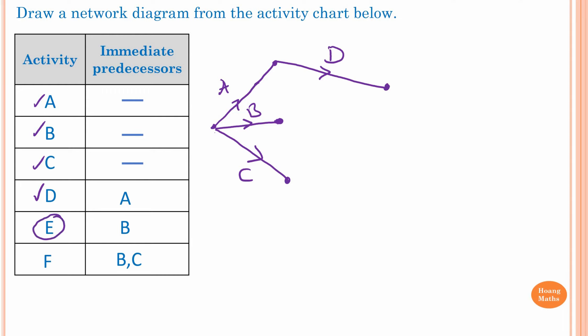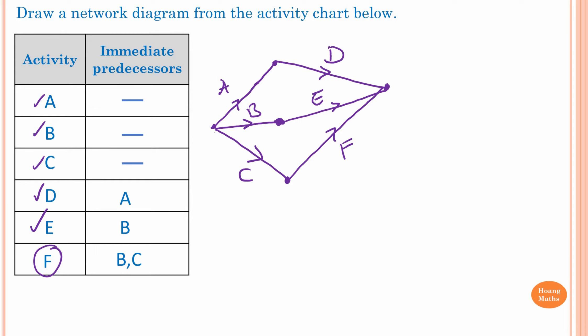To do Activity E, we need to complete Activity B first. So starting from B, we draw out and connect to Activity D — this is Activity E. And for Activity F, the immediate predecessors are B and C. I draw from Activity C first, connecting to Activities D and E — this is Activity F. But we also need to connect Activity B, so to connect B and C together we need a Dummy Activity. There — draw an arrow — this is the Dummy Activity, showing that F has immediate predecessors B and C.